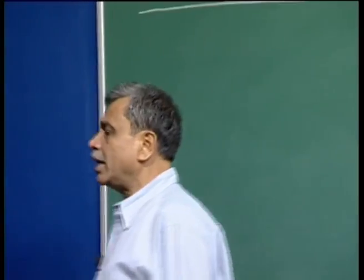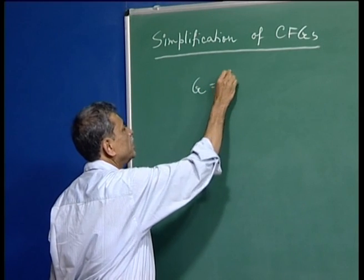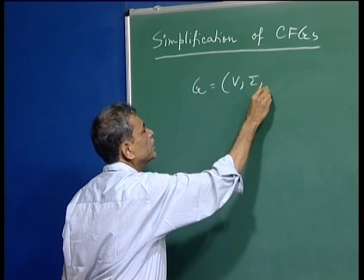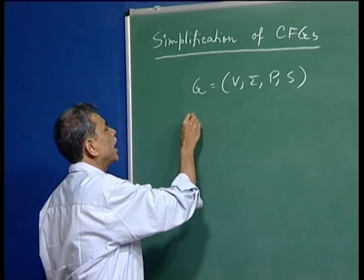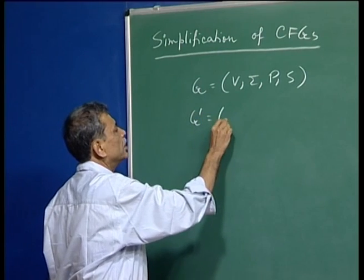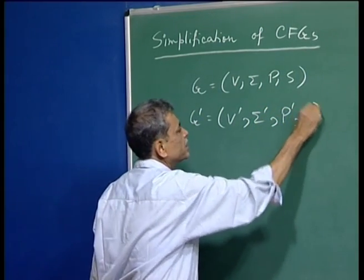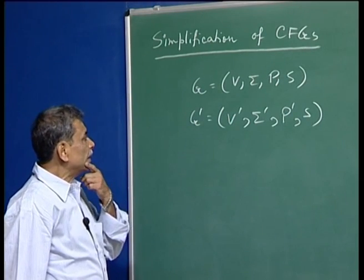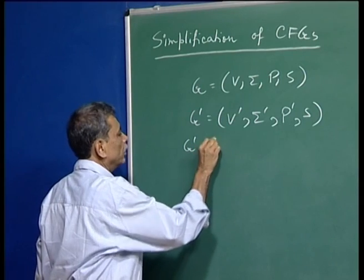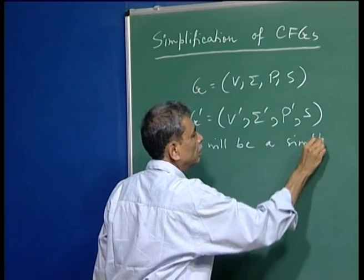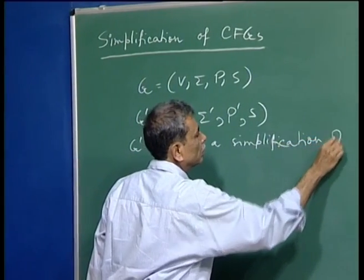In this lecture, we will see how we can simplify context-free grammar. We have a context-free grammar G with a set of non-terminals, set of terminals, set of productions, and the start symbol. We would like to get from G another grammar G', with V', possibly sigma', P', and S, such that G' will be a simplified form of G.